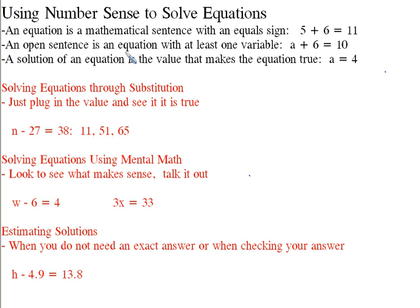An open sentence is an equation with at least one variable. Here we have something we don't know yet because it's a letter. a + 6 = 10 is an open sentence. A solution to an equation is the value that makes the equation true. We know this is going to be 4 because 4 + 6 = 10. That's the solution of this equation. An open sentence is a type of equation.